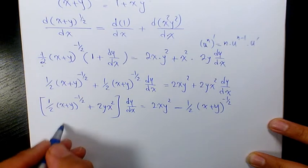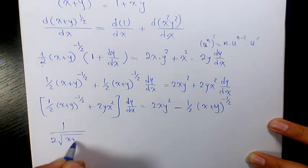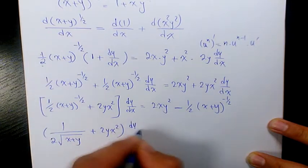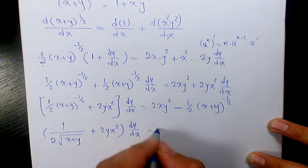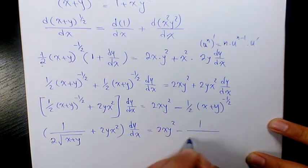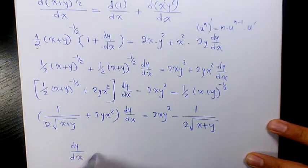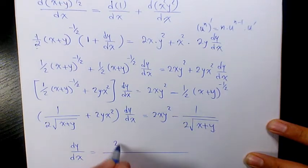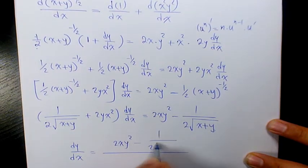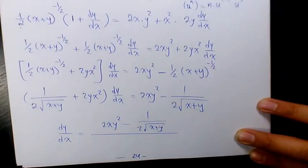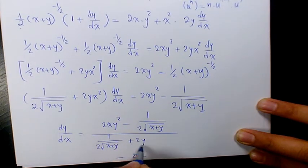We move terms with dy over dx to the left and the others to the right. Simplifying, we get 1 over 2 root x plus y plus 2yx squared times dy over dx equals 2xy squared minus 1 over 2 root x plus y. So dy over dx equals 2xy squared minus 1 over 2 root x plus y, all over 1 over 2 root x plus y plus 2yx squared.